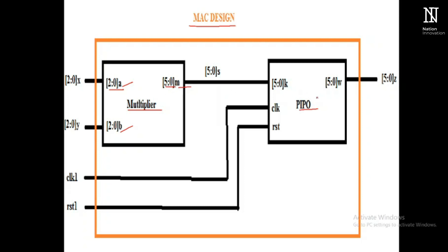Looking at the PIPO (parallel in parallel out) input variables: K is of 6-bit size, and CLOCK and RESET are of 1-bit size. W is the output variable, which is of 6-bit size.